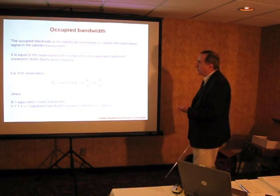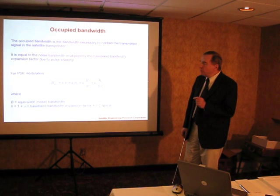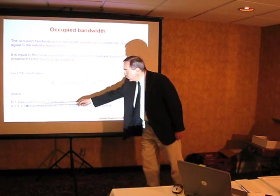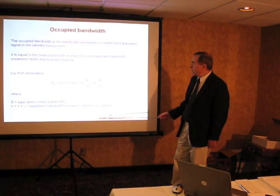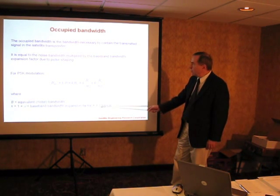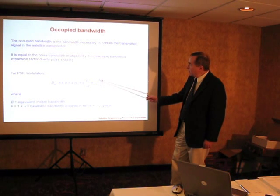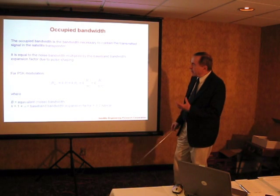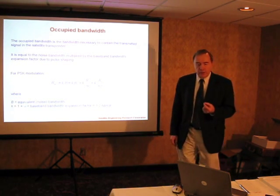The occupied bandwidth takes into account the expansion in bandwidth necessary for shaping the pulses at baseband level so that the overall bandwidth is minimized. This extra expansion factor is given by the factor K = 1 + alpha, where alpha is called the roll-off. A typical value of the roll-off is 0.2, or 20%. We speak of 20% raised cosine filtering, so that the bandwidth expansion factor in that case would be equal to 1.2. This, then, is the complete expression for the occupied bandwidth in terms of the data rate, bits per symbol, code rate, and the bandwidth expansion factor due to baseband filtering. The occupied bandwidth is the practical bandwidth that would be specified by a regulatory constraint.